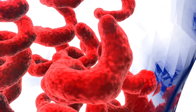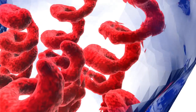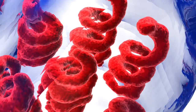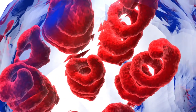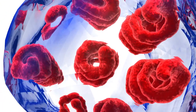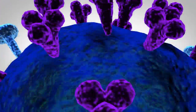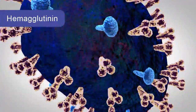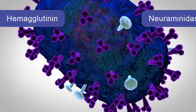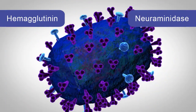The heart of a flu virus has eight string-like segments called RNA. These are the genes that encode parts of the virus. Around the RNA are different proteins. The proteins involved in drift are called hemagglutinin and neuraminidase. Scientists call them HA and NA.